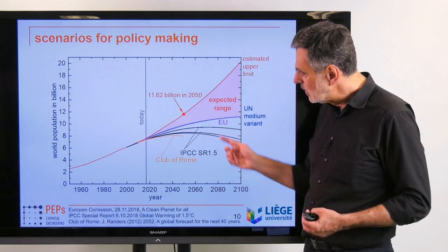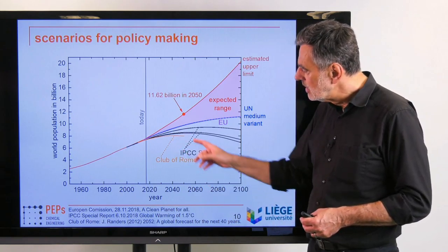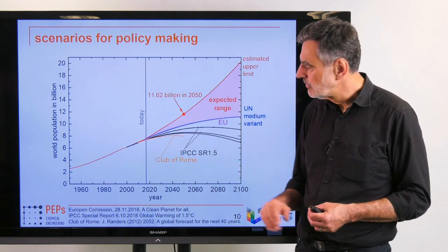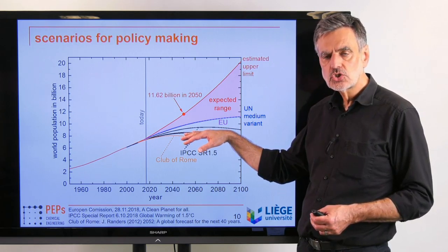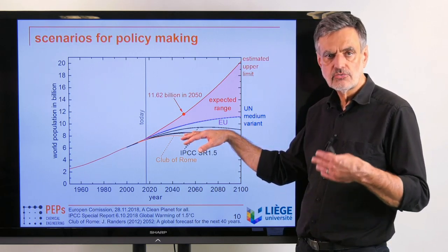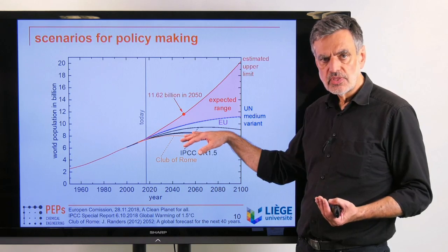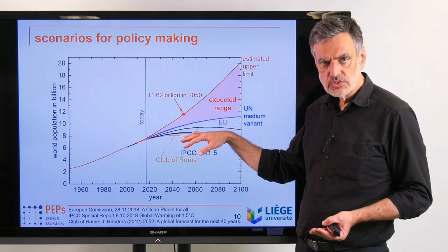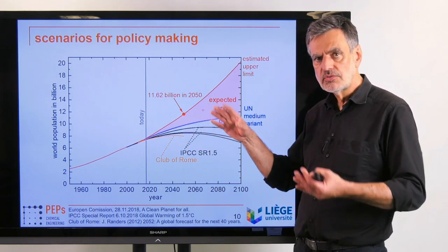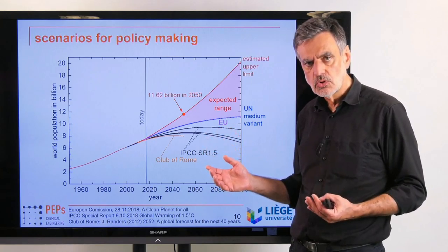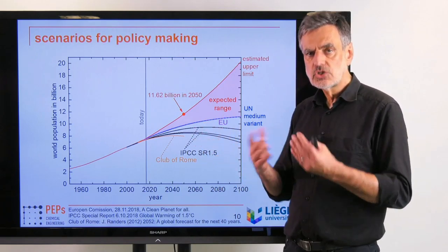To guide policies, we would of course like to take this entire situation into account, also the worst case and not only the optimum case. Unfortunately, studies published to guide politics — such as the basis for EU sustainability policies published in November 2018 — use the lower population estimate. They do not take into account the worst case.